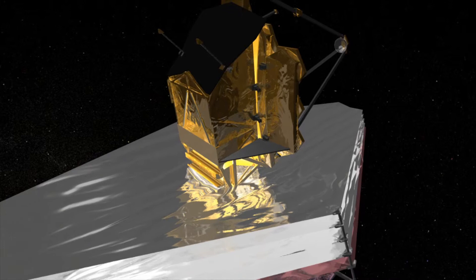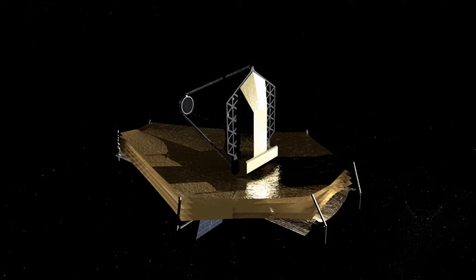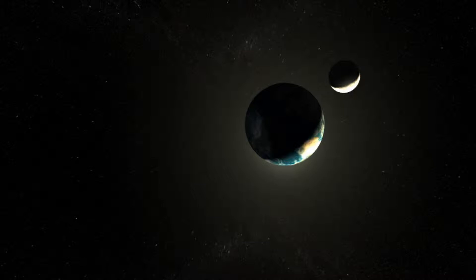The James Webb Space Telescope won't orbit the Earth. Instead, it will be parked 1.5 million kilometers from our planet, in a wide orbit around the Sun.